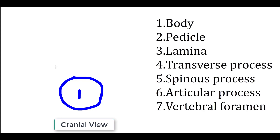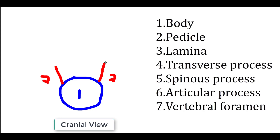Next we'll draw a couple of pedicles emerging dorsally from the body. 'Pedicle' is derived from the term for small foot. We're going to join these two pedicles with two lamina. The pedicle and the lamina come together to form the vertebral arch. The transverse process is a lateral projection from where the pedicle and the body unite.